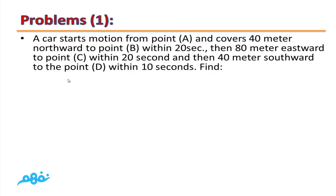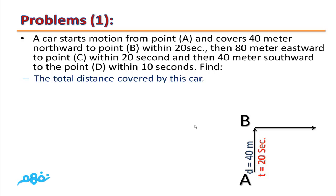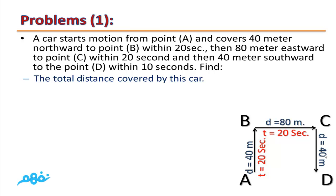Practice problem: A car starts from point A and covers 40 meters northward to point B in 20 seconds, then 80 meters eastward to point C in 20 seconds, then 40 meters southward to point D in 10 seconds. Find: (1) the total distance covered by this car. Total distance = 40 + 80 + 40 = 160 meters.